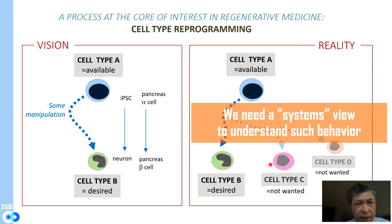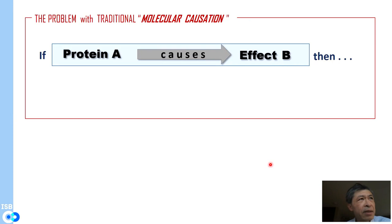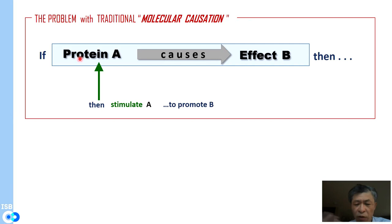I'd like to show you how we should change our thinking — and you've heard a bit about systems thinking from Peter's and Bill's talks. We have to move away from reductionist, traditional thinking where we say there are mechanistic pathways, like protein A causes effect B or phenotype. The traditional molecular thinking is: if we want to achieve B, we stimulate protein A by overexpressing it; or if we want to block effect B, we inhibit protein A.